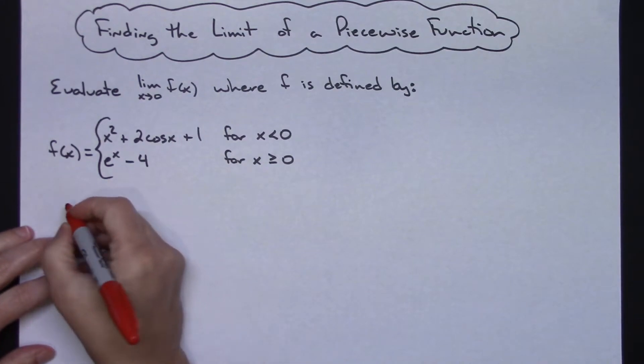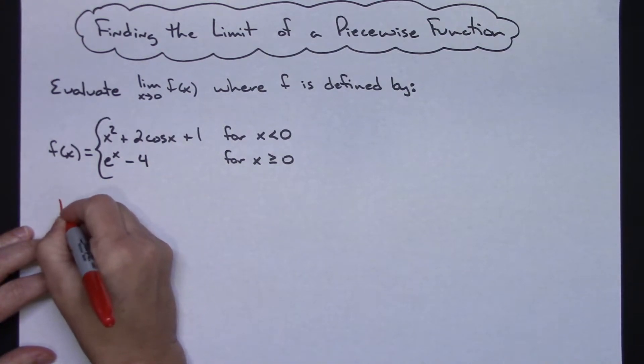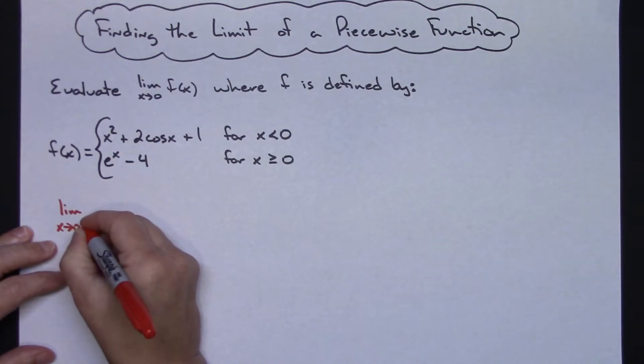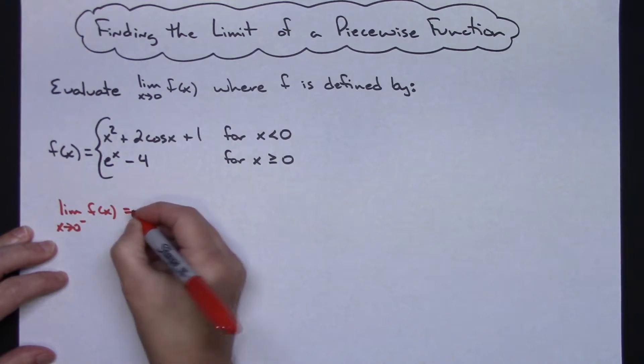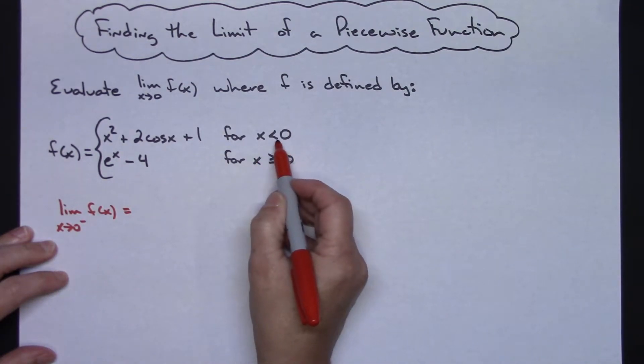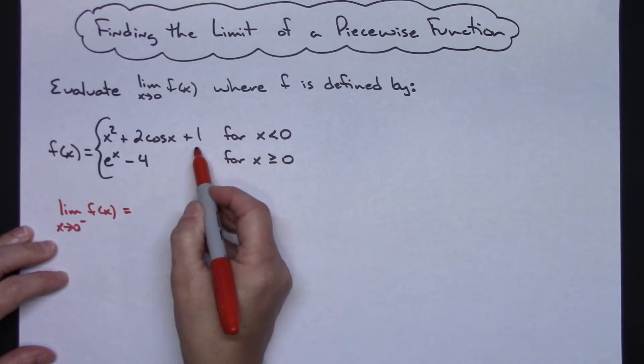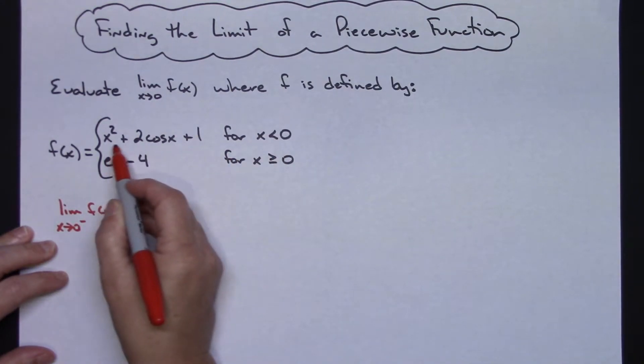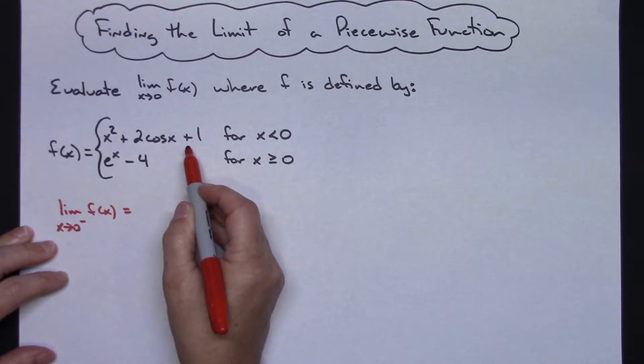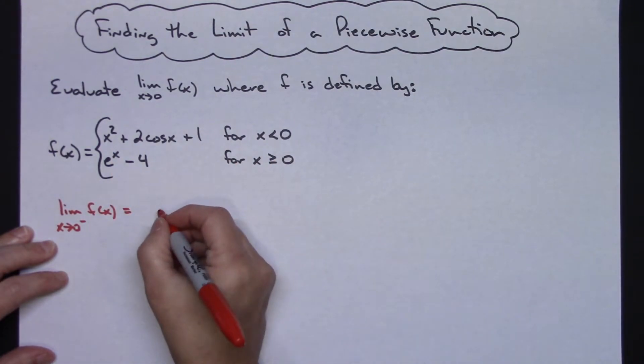So if I'm going to work this out, I'm going to do the limit as x approaches 0 from the left of f(x). Now I'm going to come up here - x is less than 0, so this would be coming from the left, so I will be evaluating this expression for when x is approaching 0 from the left.